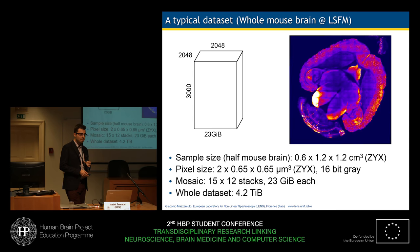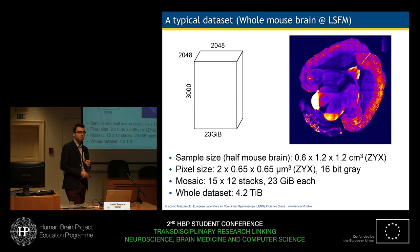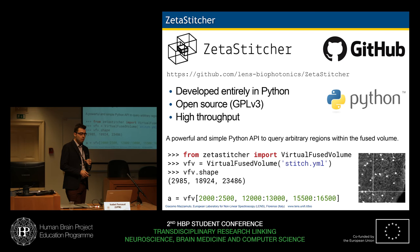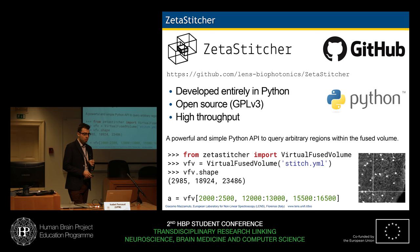As I said, in order to obtain the global volume we see here, we need to do image stitching, and we do this using the software Zeta Stitcher, which is available on GitHub.